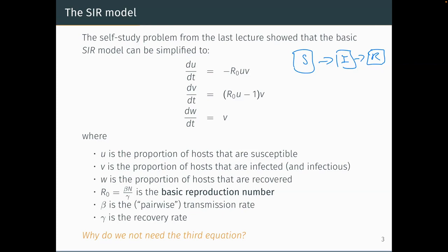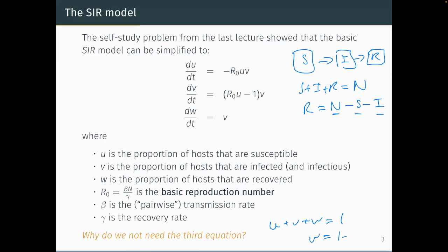Why don't we need the third equation? Because S + I + R = N was constant, so R = N − S − I. The same logic applies here: u + v + w = 1 since they're proportions, so w = 1 − u − v. We still have that equation but don't actually need it to determine whether an epidemic takes off.